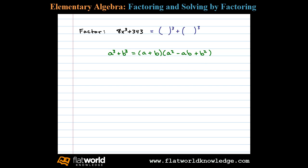We begin by identifying the perfect cube factors of each term. In this case, 8x cubed factors as 2x cubed: 2 cubed is 8 and x cubed is x cubed. 343 we recognize is 7 cubed, so we'll use 2x for a and 7 for b.